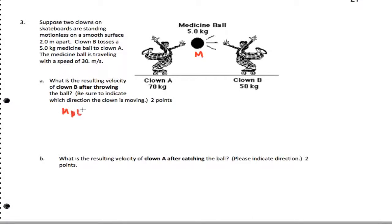So we have MB VB initial plus M of the medicine ball, V the medicine ball initial. And then they both acquire final speeds, which is just peachy keen. So now let's plug in numbers.